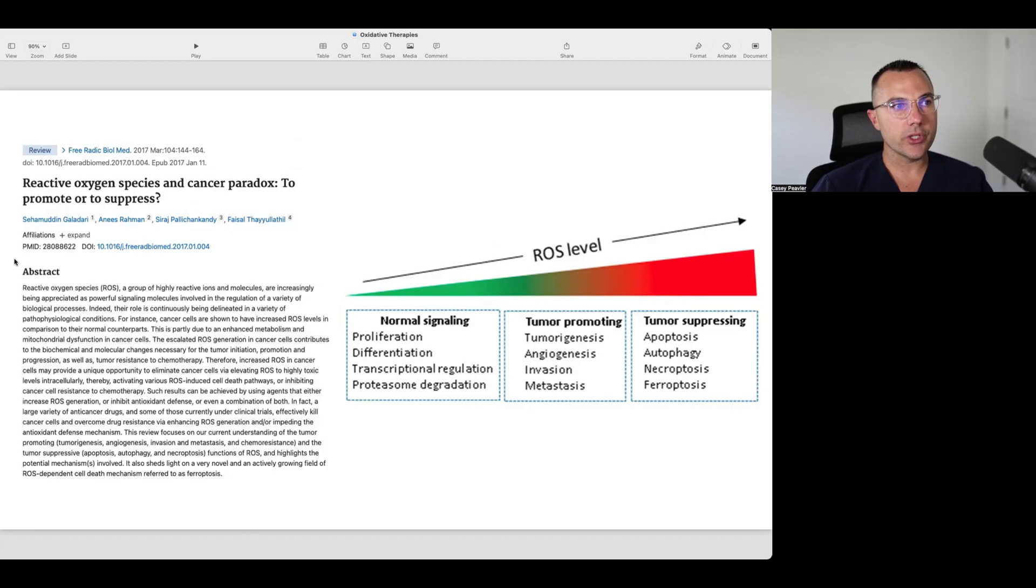This review focuses on the current understanding of tumor promoting, tumorigenesis, angiogenesis, invasion, and metastases, and chemoresistance, and the tumor suppressive apoptosis, autophagy, necroptosis functions of ROS and highlights the potential mechanisms involved. Also sheds light on a very novel and actively growing field of ROS-dependent cell death mechanism referred to as ferroptosis.